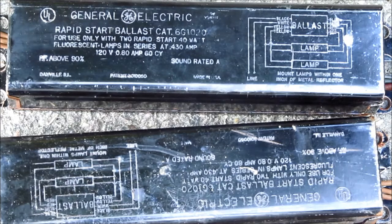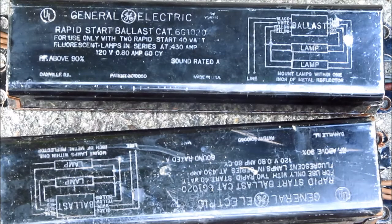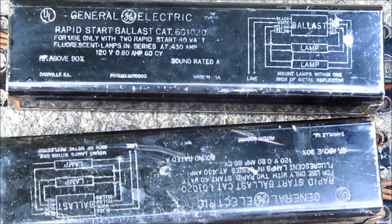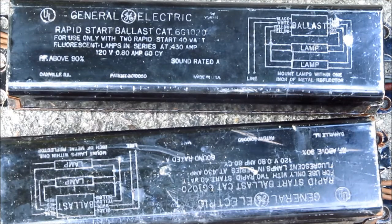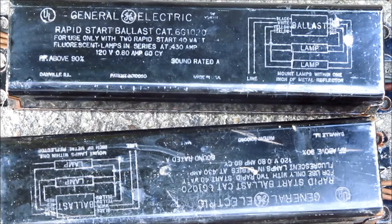The other two major things I grabbed from the scrapyard was this pair of General Electric Rapid Start ballasts. These were mounted in a fixture that was in pretty rough shape, so I just grabbed them and the sockets with the wires.